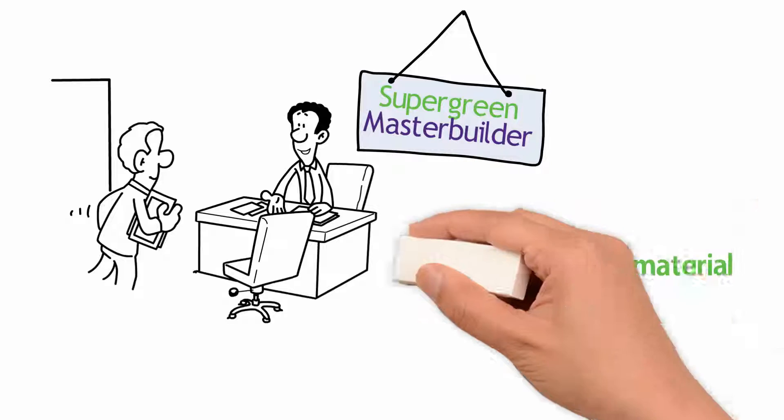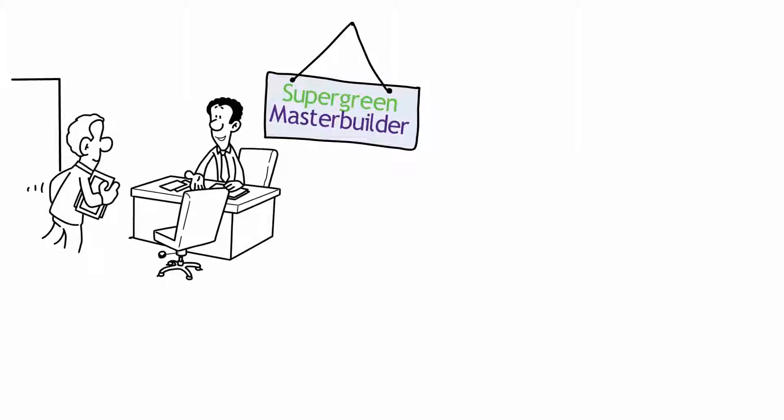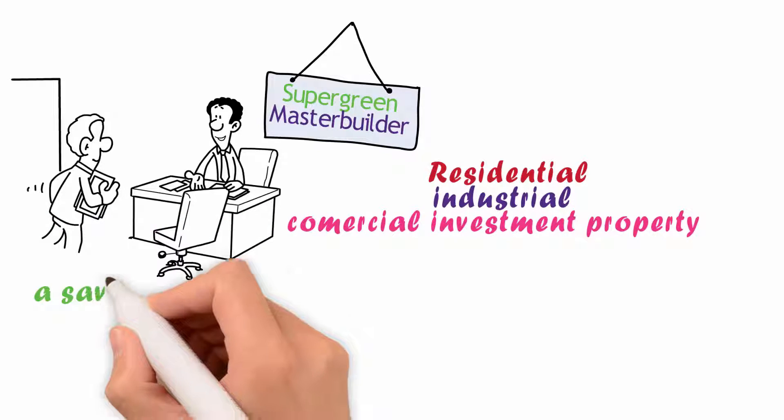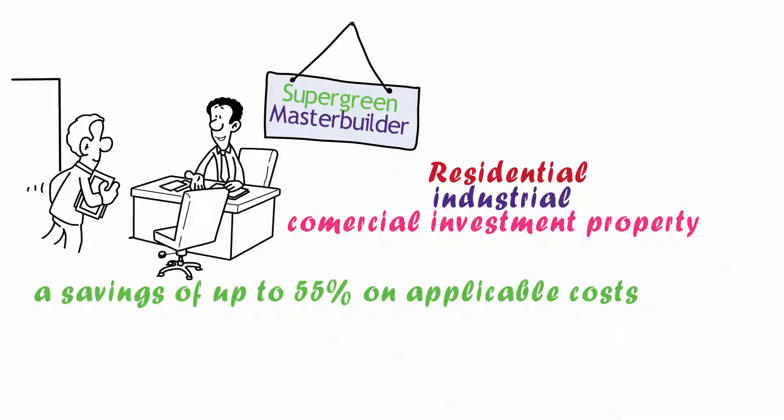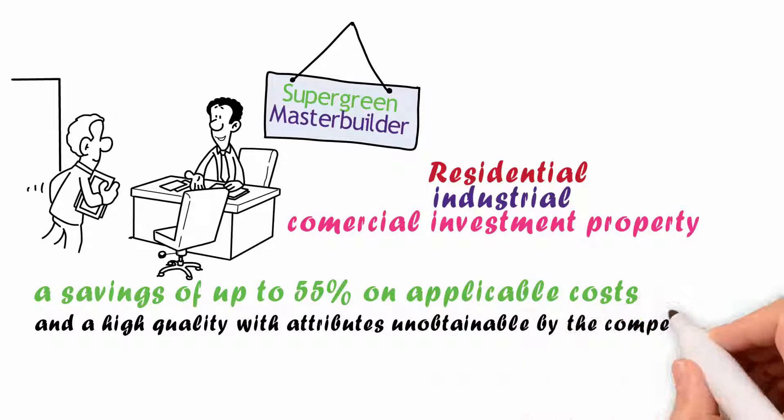The super green builder explains to John that they can build either residential, industrial, or commercial investment property for John with a savings of up to 55% on applicable costs and a high quality with attributes unattainable by the competition.